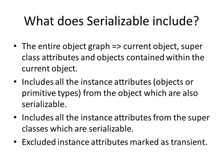The serializable interface will include all the instance attributes. The instance attributes could be primitive types or they could be objects of other classes. But those objects should also be serializable for it to serialize those objects. It will serialize all the instance attributes from the object which are serializable, and also all the instance attributes from the super classes.